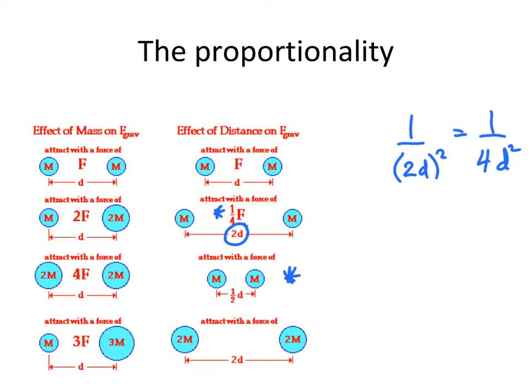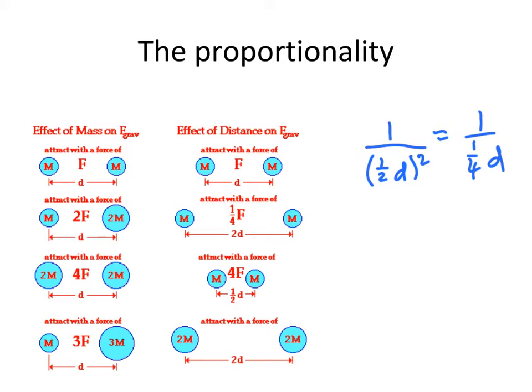What happens if we halve the distance between the masses? We cut the distance in half. Well, now the force is going to be four times as strong. Since we have 1 over 1 half times D, and then we square the whole thing. 1 over 1 half squared is 1 quarter. And so we end up with 4 over D squared. So when compared to 1 over D squared, this is 4 times as great. So the force is now 4 times as great.